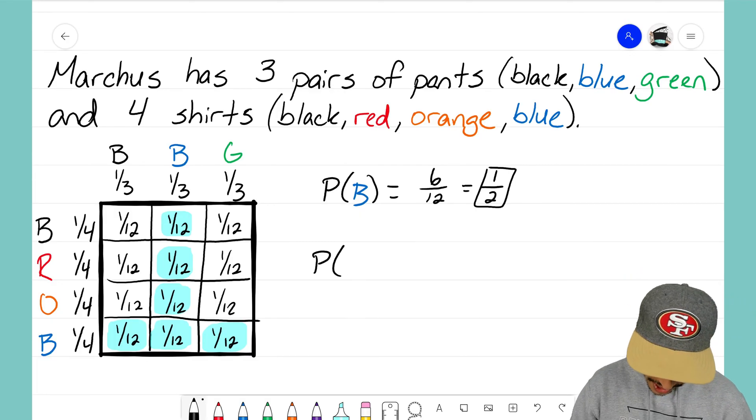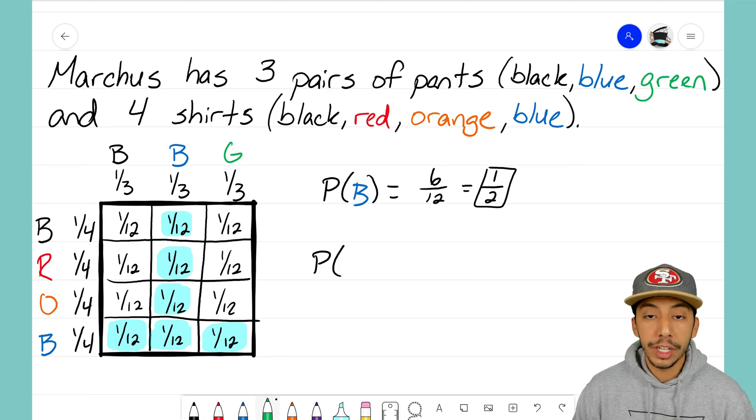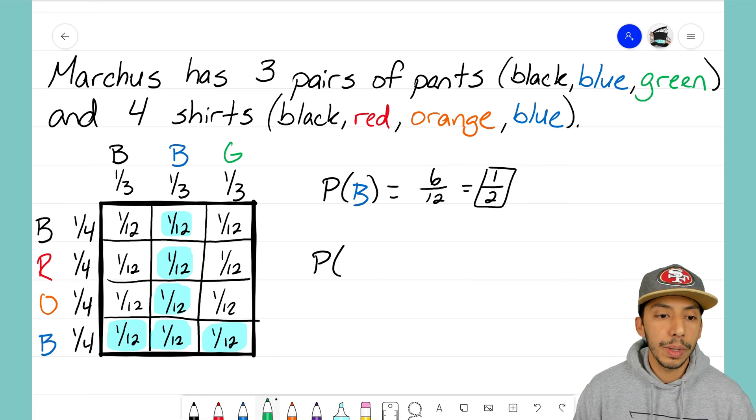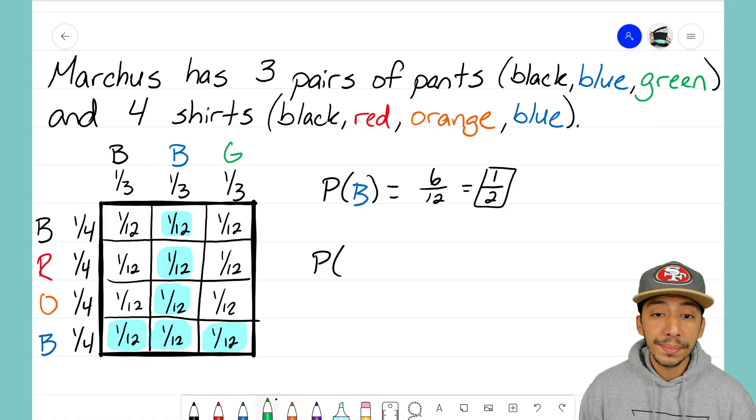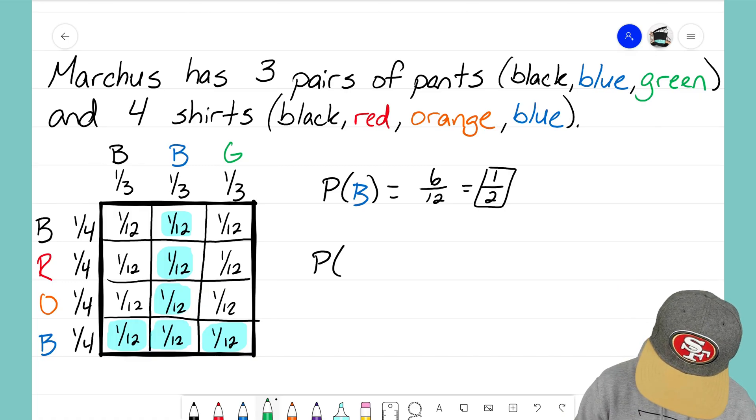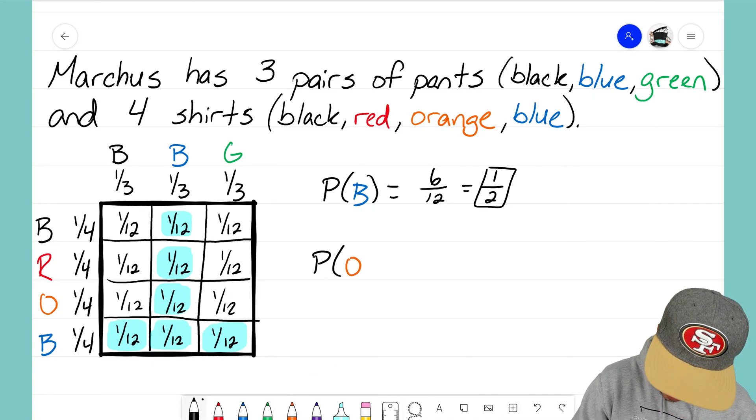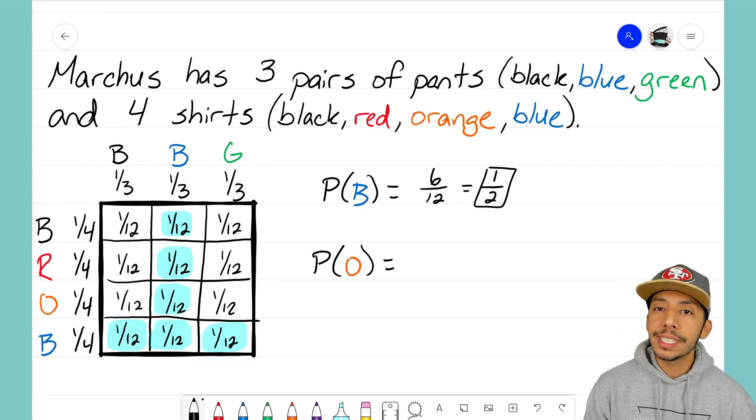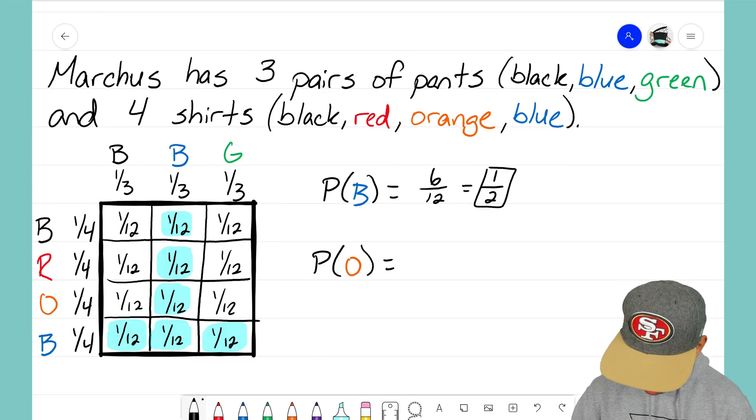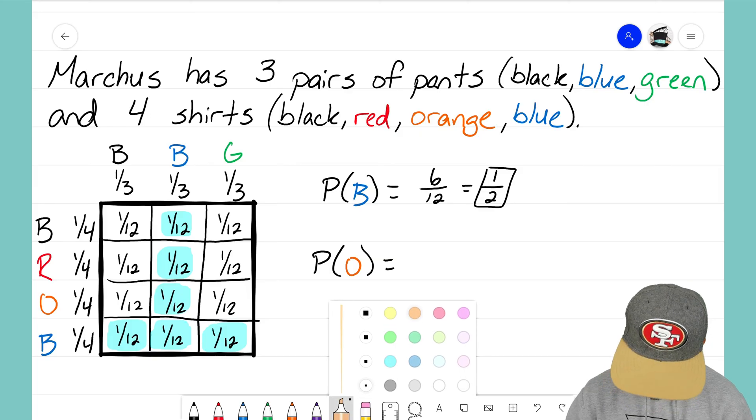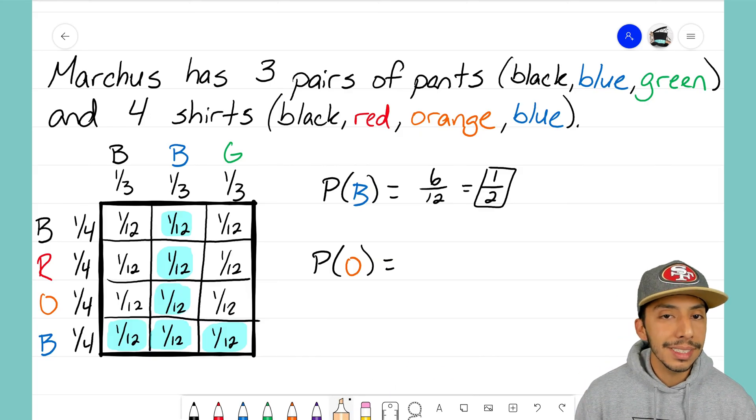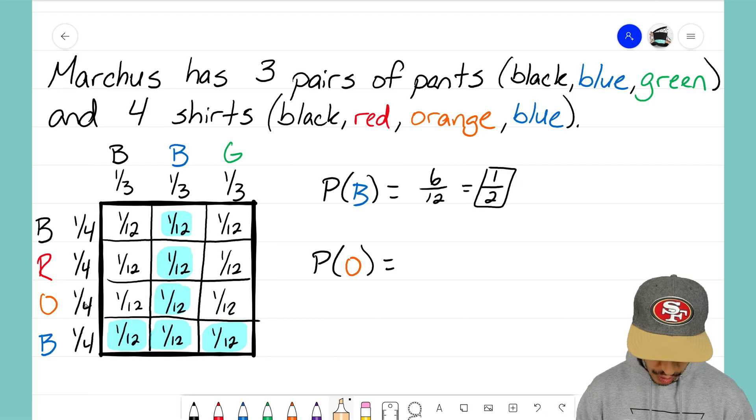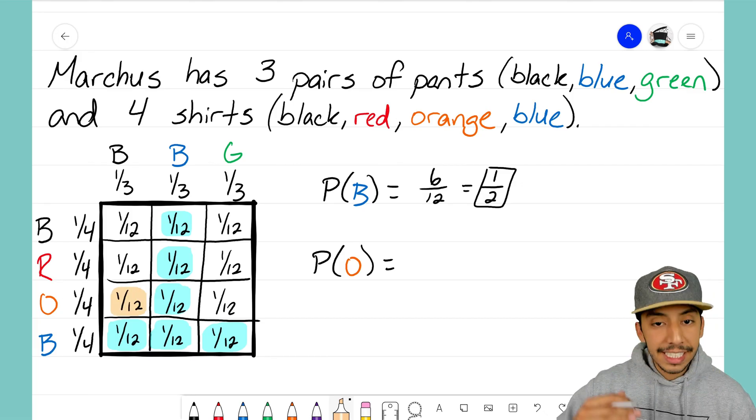Let's see if we can do one more problem with this. Let's see, what's the probability that he's going to wear the color orange? So I'm going to go ahead and put this in there, and again now I'm going to look for all the boxes in there that represent Marcus wearing orange. So I get my highlighter out and I'm looking for what boxes is he going to wear orange.